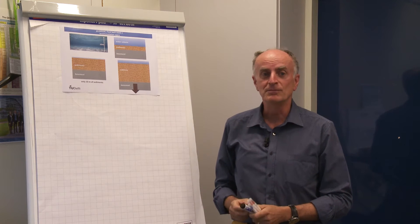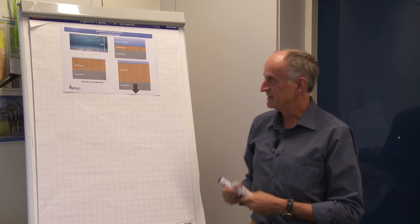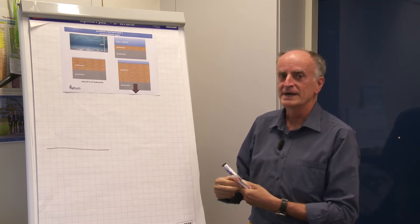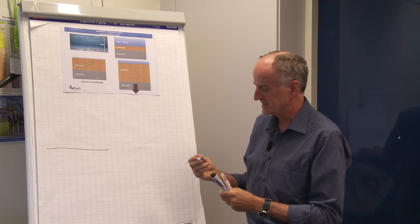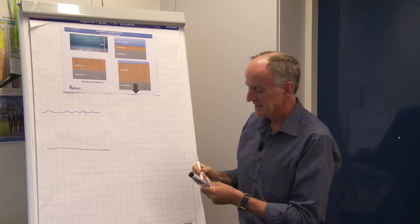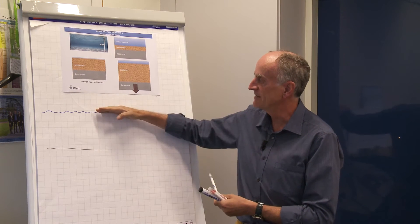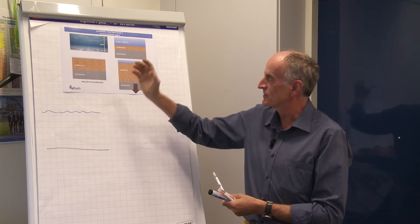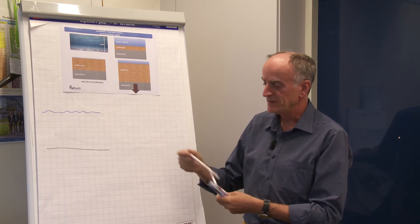The first point is accommodation space. We have defined accommodation space as the vertical dimension of the space where you can deposit sediments. The most typical one is the space between the sea level and the sea floor. If this is for instance 10 meters, then if this does not change,